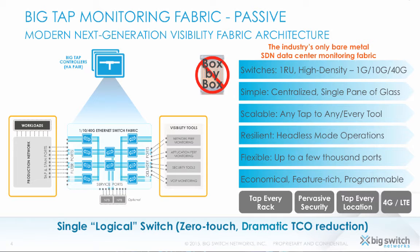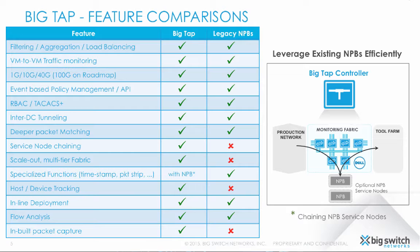BigTap can also filter beyond the Layer 2 through Layer 4 headers to enable advanced quality assurance, SLA verification, as well as in-depth root cause analysis. Built using the REST API first principle, BigTap is easily programmable and can be completely automated for a variety of customer use cases.